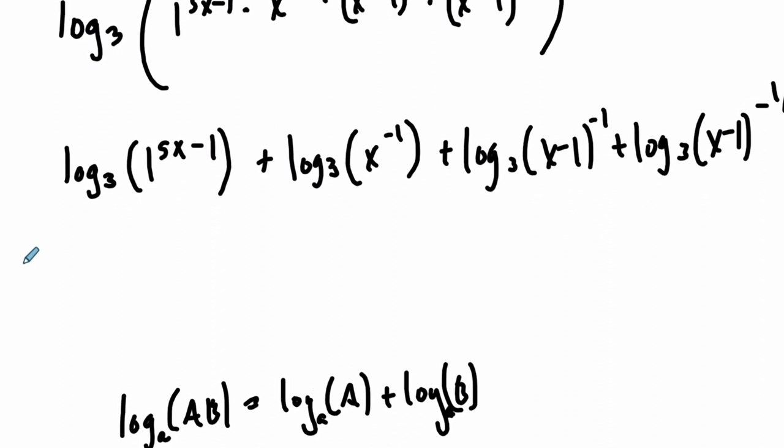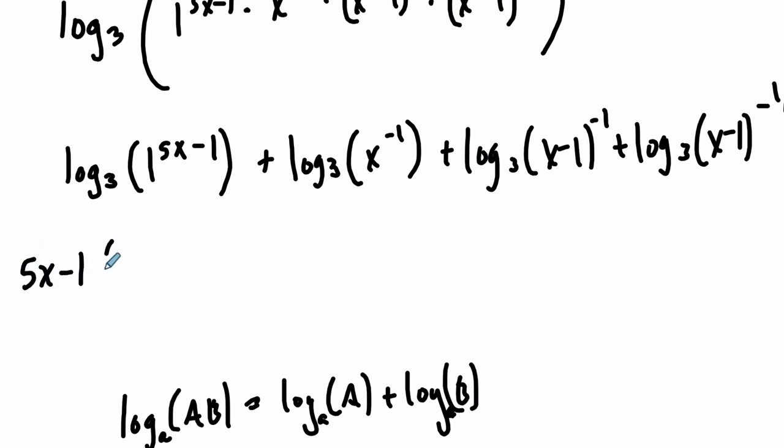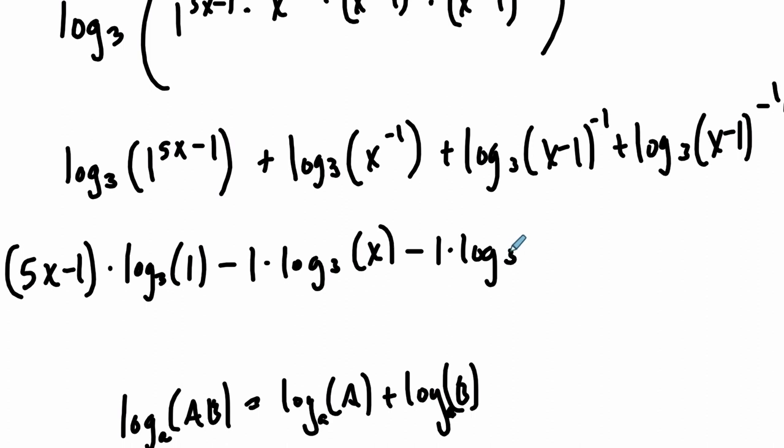In the first one, our whole exponent is 5x minus 1. So we do 5x minus 1 times the log, 5x minus 1 like this, I'll put parentheses, times the log base 3 of 1 plus, now, well actually I'll put a minus there, I'll put a minus, because negative 1 times the log base 3 of x, it's going to give a subtraction anyway, minus 1 times the log base 3 of x minus 1, minus, we're almost there, 1 third times the log base 3 of x minus 1.